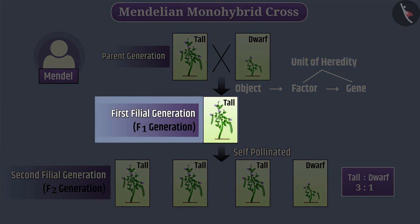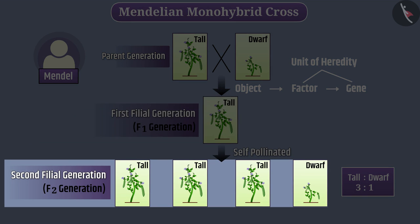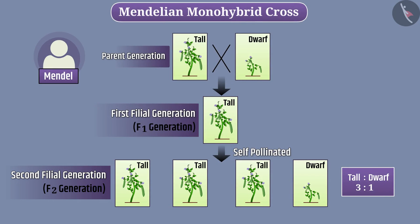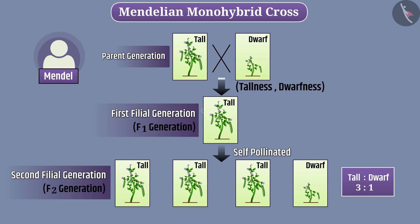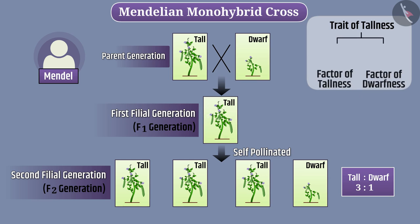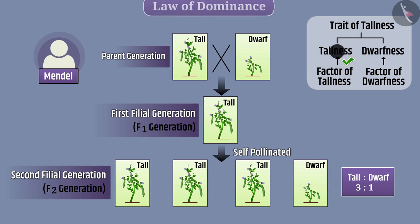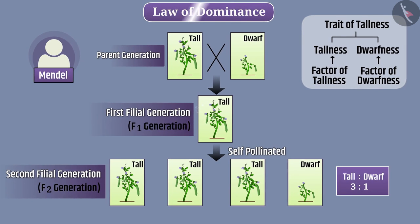All F1 generation plants were tall but the F2 generation had a mixture of tall and dwarf plants. This means F1 generation plants must have inherited both tallness and dwarfness traits from the parent generation. Therefore, both the factors, i.e. tallness and dwarfness, must be present in the F1 generation plant. However, only the trait of tallness gets expressed. With this understanding, Mendel proposed the law of dominance.